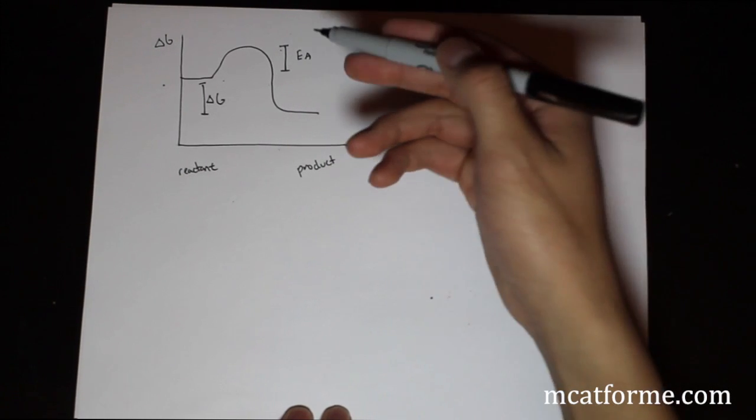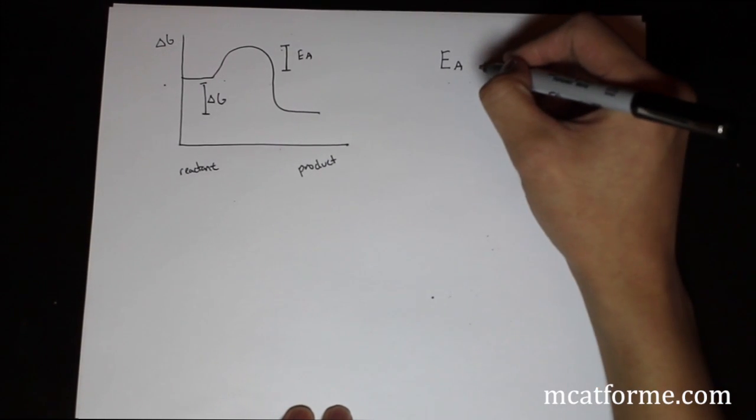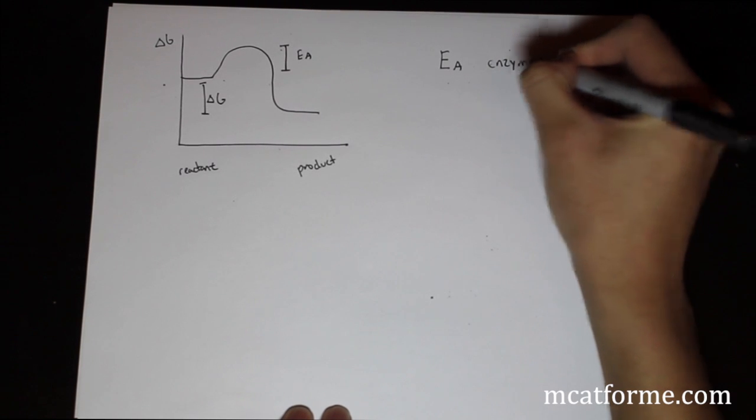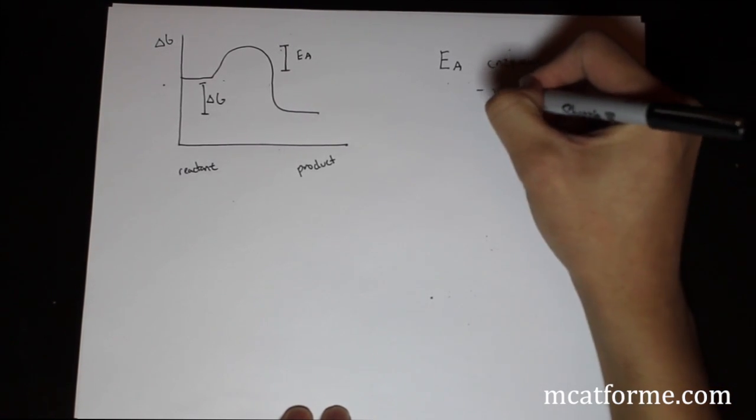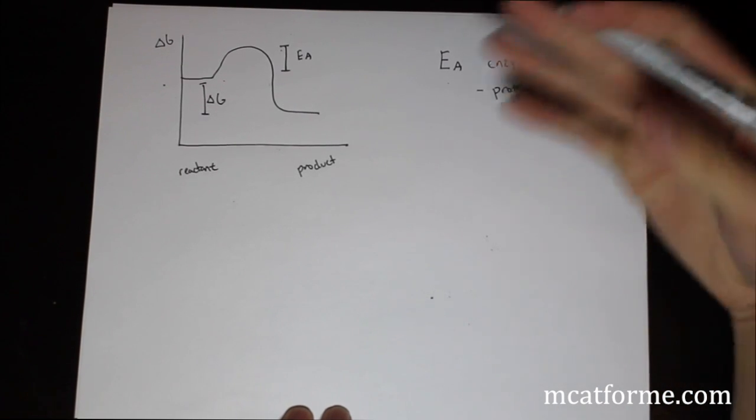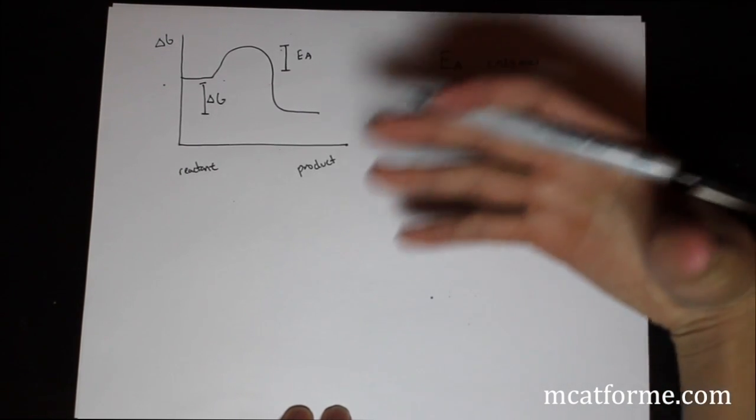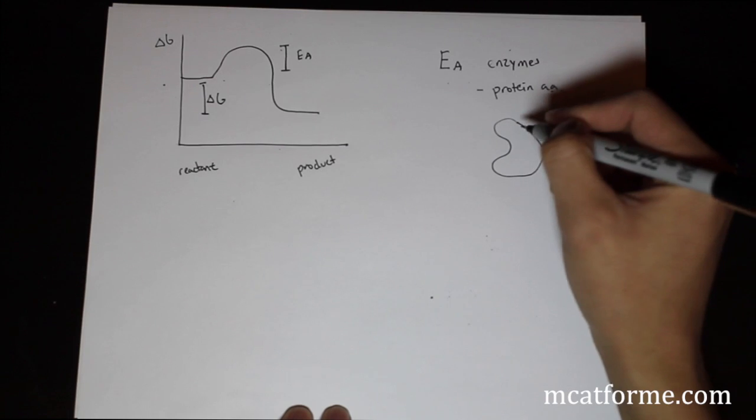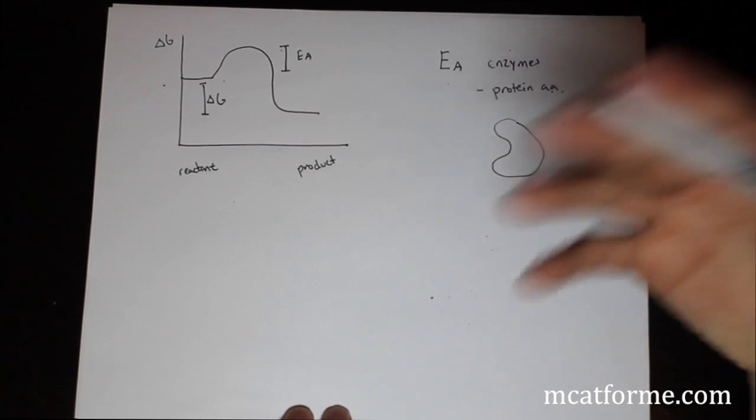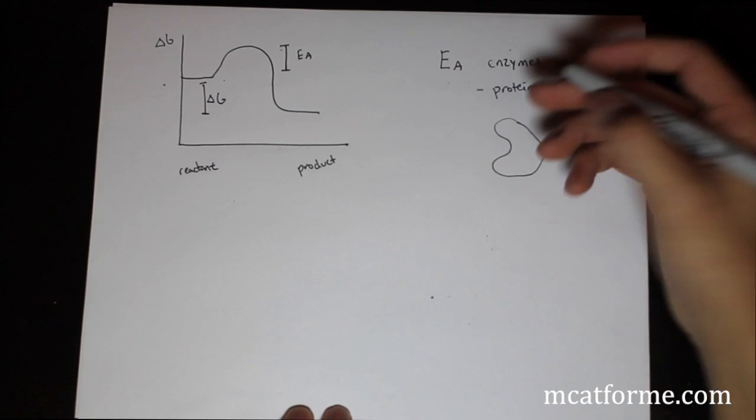So that's why we see this activation energy. Activation energy can be affected by something called enzymes. So enzymes are proteins, so they're made of amino acids. Enzymes can help to get reactions to occur. And if you can think of this as an enzyme, there's a couple of ways that these enzymes can work and we'll see how they work later.